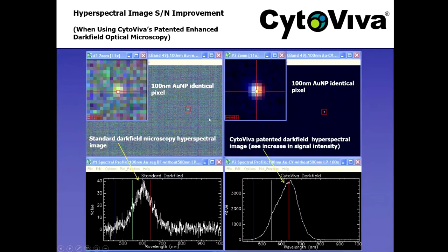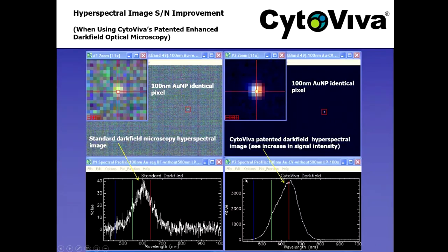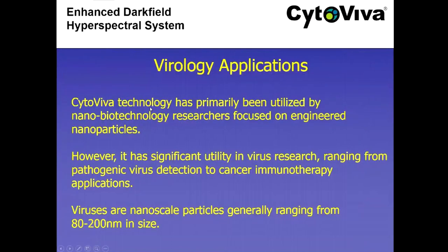This image of a 100 nanometer gold particle demonstrates how hyperspectral imaging benefits from the enhanced dark field optics. Using the exact same particle and settings — standard dark field on the left versus CytoViva enhanced dark field on the right — you can see lots of noise and not much amplitude on the left versus hardly any noise and plenty of amplitude on the right. All spectroscopy is dependent on good signal-to-noise to produce quality data.